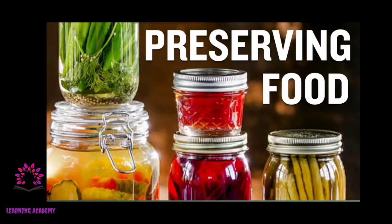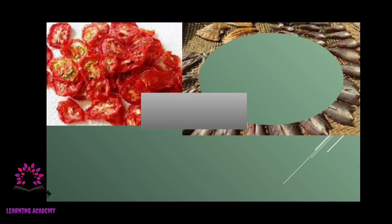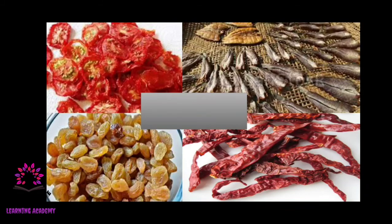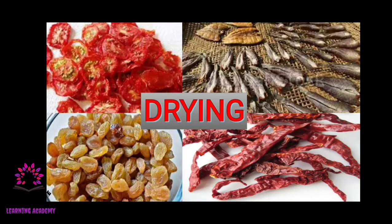Now, how will you preserve food at home? We use different methods for preserving food. Look at these pictures — you can see dried tomatoes, dried fish, dried chilies, and dried grapes. The first method of preserving food items is drying. When we dry the items, the food is preserved.